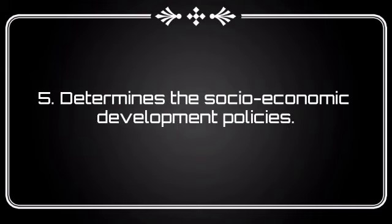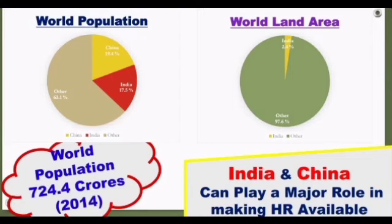According to the United Nations Organization's Report 2014, the world population is 724.4 crores. In 2020, it is 780 crores. In world population, China ranks first and India ranks second.